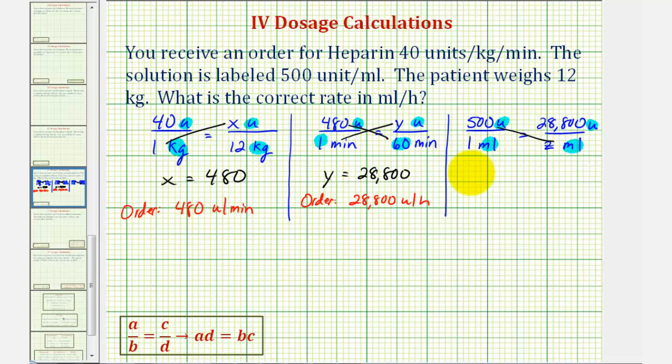We have 500 times z, that's 500z, must equal 1 times 28,800, which of course is 28,800.